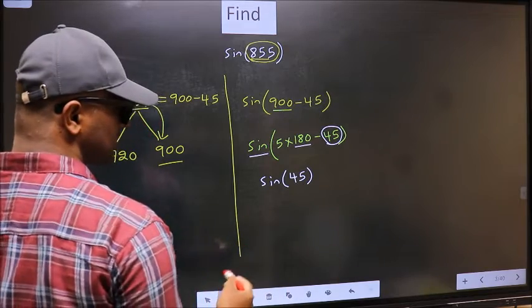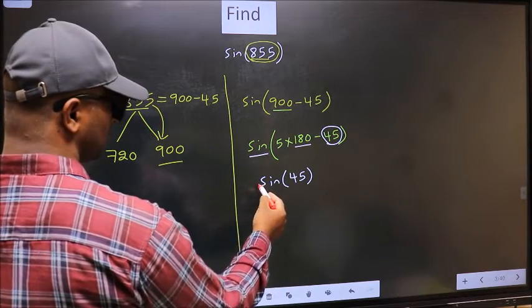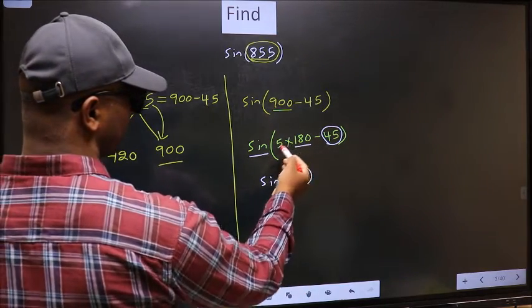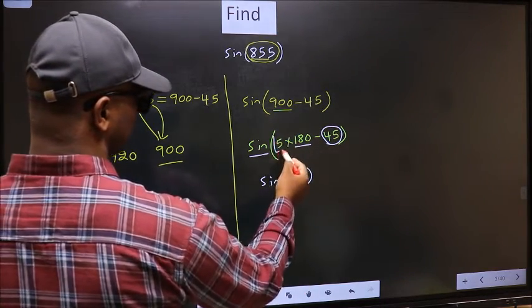Now the question is, will we get here plus or minus? To answer that, we should look at the number before 180. That is 5.